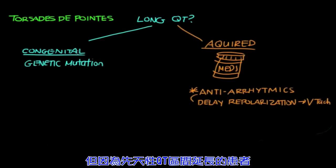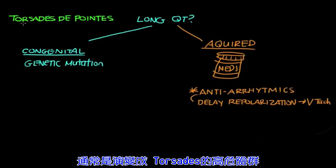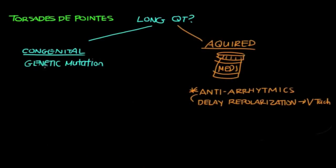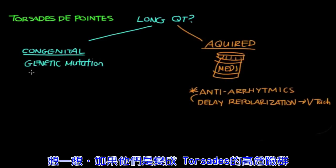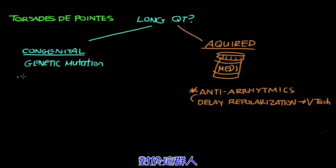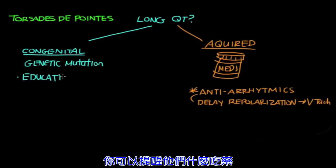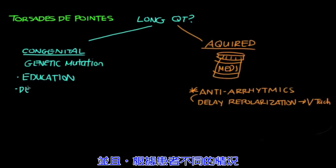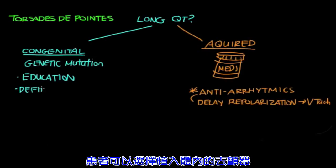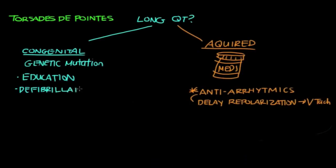Since people with congenital long QT are always at a higher risk of developing Torsades, it's good to know about this condition and to think about it if they develop an abnormal rhythm. Also, in this group of people, education is really important. You can advise these people on what meds to avoid to prevent going into Torsades. And, depending on the patient and their circumstances, the patient may opt for the implantation of an internal defibrillator.